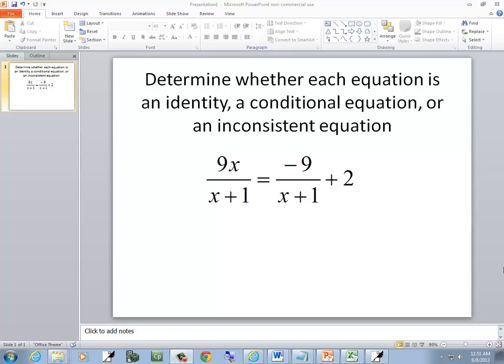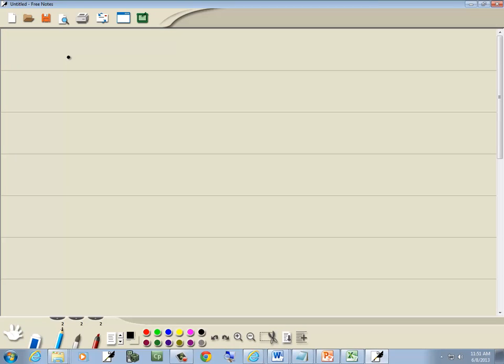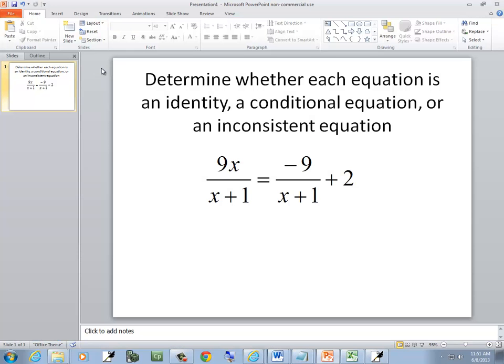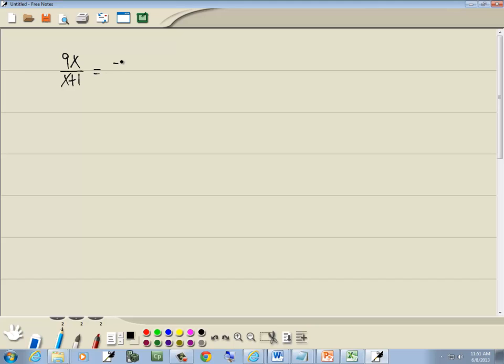We want to determine whether each equation is an identity, a conditional equation, or an inconsistent equation. So let's look at this problem. We've got 9x over x plus 1 equals negative 9 over x plus 1 plus 2. And now we solve it just like normal. So we'll go through our four steps.